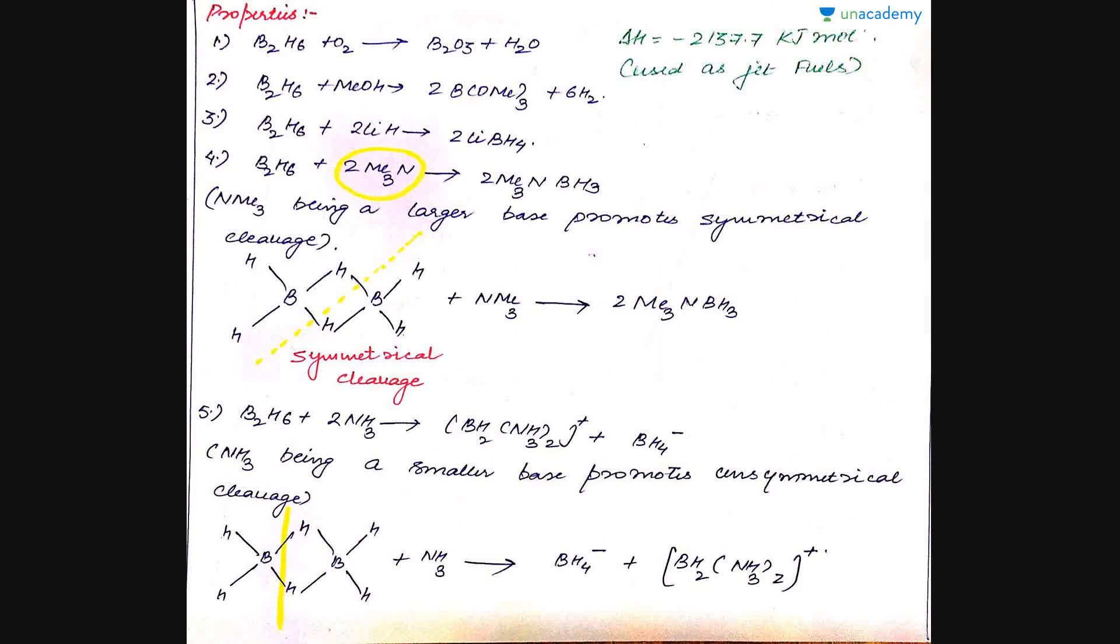Next are the properties of diborane. First, treatment with oxygen: it forms boric oxide and water. This reaction has a very high enthalpy, minus 2370.7 kilojoules per mole. Due to this high amount of energy released during this process, this reaction is applied in jet fuels to produce energy. Second, B2H6 on treatment with methanol gives trimethoxy boron and hydrogen is released. Next, on treatment with lithium hydride it forms lithium borohydride, which again acts as a very good reducing agent.